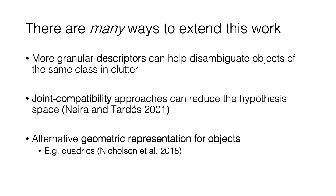There are still many ways that this work could be improved. For example, more granular feature descriptors can be used to help disambiguate objects of the same class in clutter. Moreover, previous work has shown that assessing joint compatibility for data association, rather than individual compatibility as we do here, can greatly reduce the size of the hypothesis space and prune obviously incompatible data associations immediately. Finally, in this work we focused on the data association problem and didn't consider the issue of semantic landmark representation. Knowledge of the full 6-degree-of-freedom pose of an object can greatly improve the accuracy of data association, so methods for inferring the full pose of objects, like the quadratic representation, are of interest.